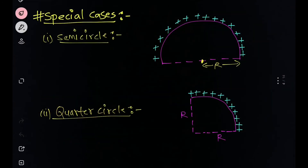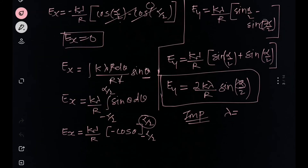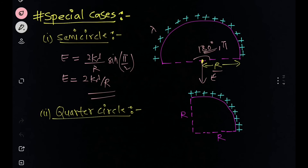For a semicircle with uniform charge distribution lambda and radius r, the arc makes an angle of 180° (π radians) at the center. The net electric field is in the y-direction: E = 2kλ/r·sin(π/2) = 2kλ/r·sin(90°) = 2kλ/r, since sin(90°) = 1.